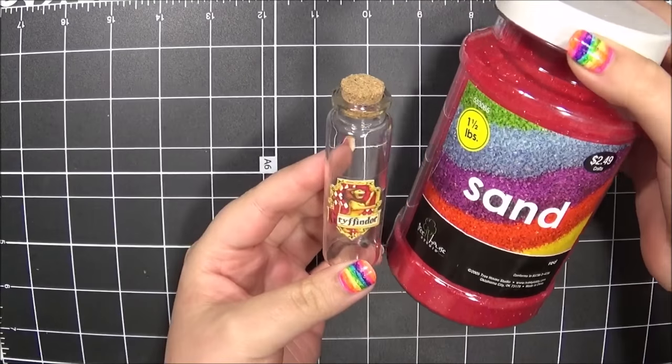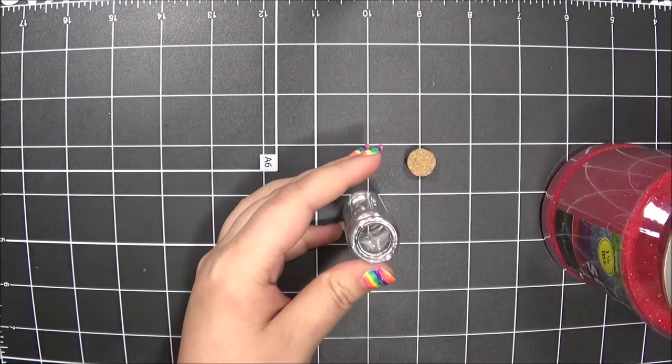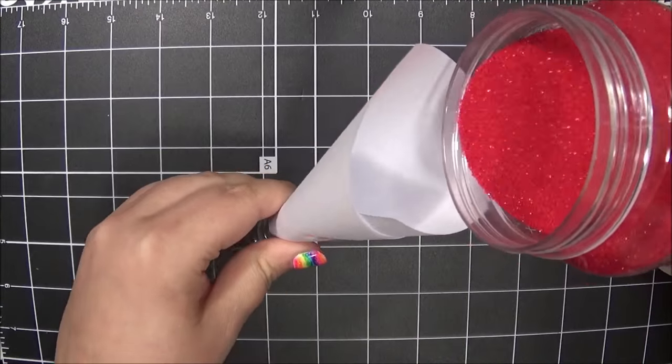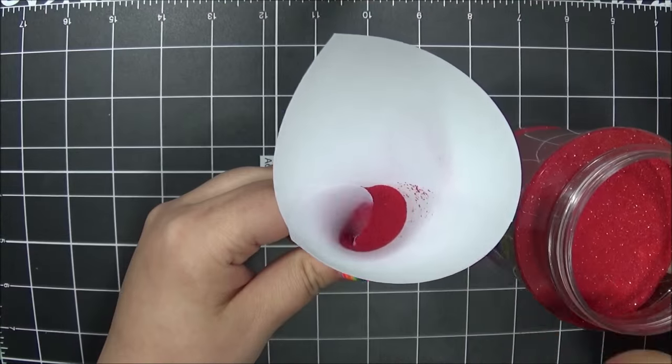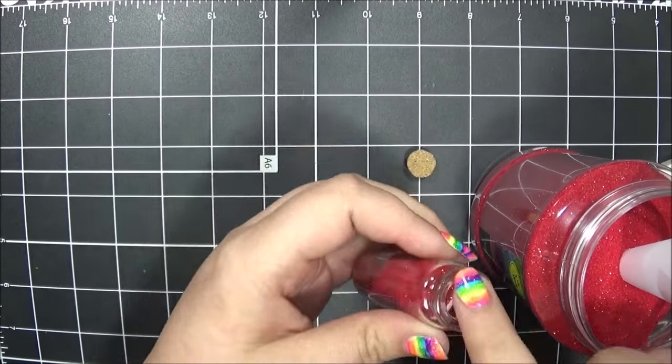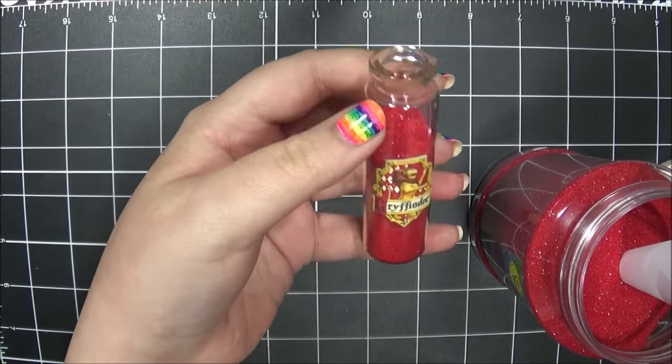Close behind is Gryffindor house and I filled it up a little bit below Slytherin house with red sand. This part is obviously up to you. You can decide who you want in the lead in the house cup, who you want in second place, third place, fourth place. Again, it's up to you.